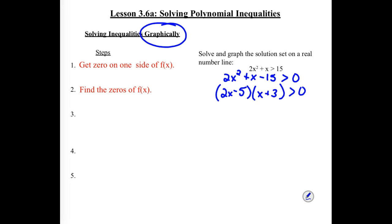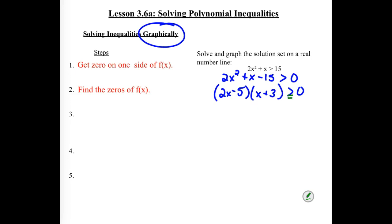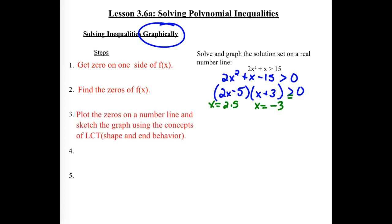Now, I know it says greater than zero, but we're going to pretend in our minds that it equals zero to find those critical points. What makes the first parenthesis equal to zero? Five halves, which is 2.5. And in our second factor, if x is negative 3, we get zero. So our zeros are 2.5 and −3. Our next step is to plot those on a number line and sketch the graph using the leading coefficient test.